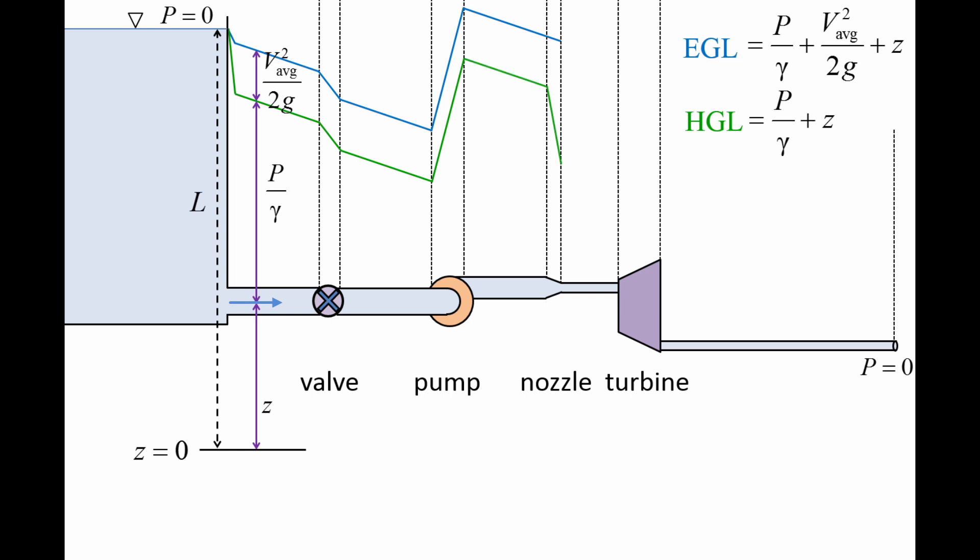The HGL curve declines at the same rate through the pipe, but then drops rapidly at the nozzle since the velocity head increases at the expense of the pressure head.